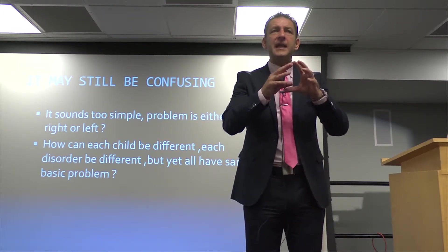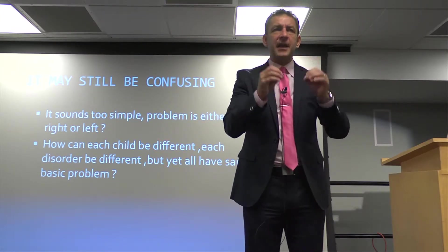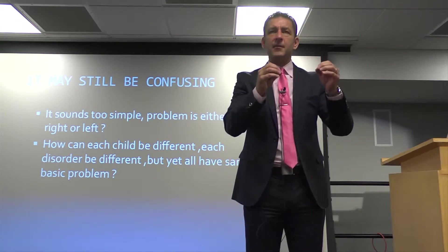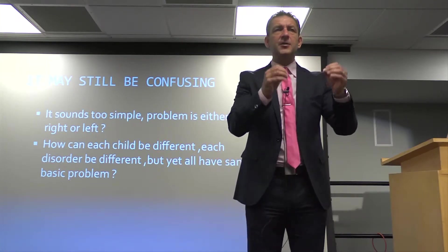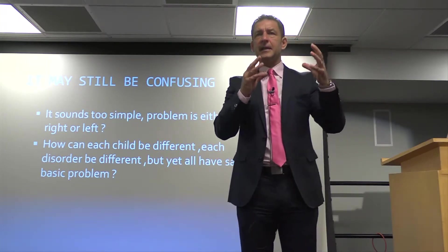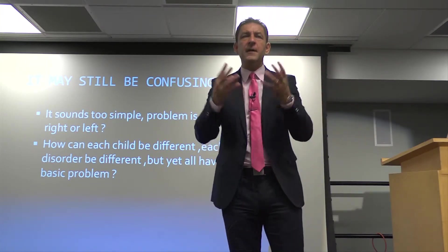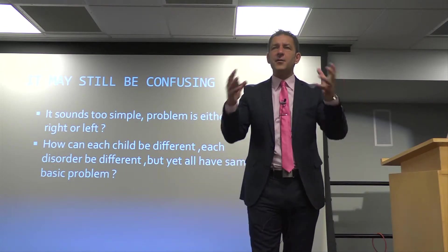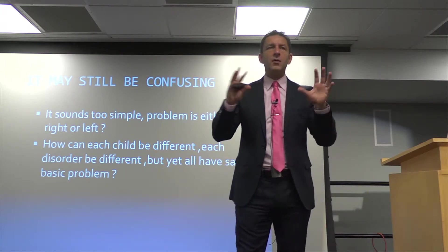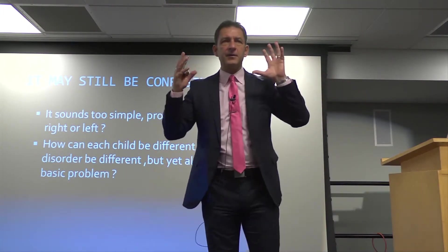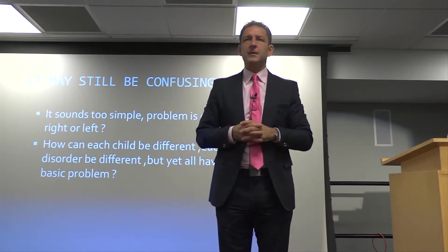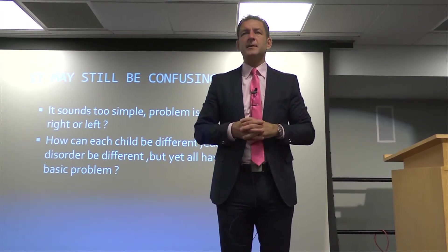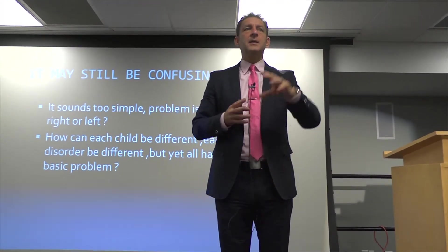So I need to identify each and every area, and I need to be able to specifically do what I need to get that to play faster so it can play together with all of the other areas of the brain. So what's the difference between ADHD and autism and dyslexia?